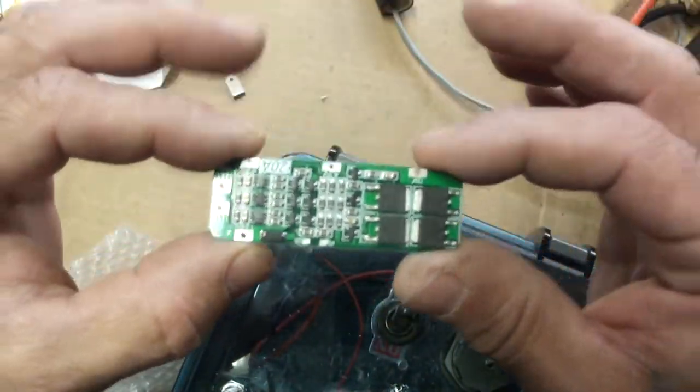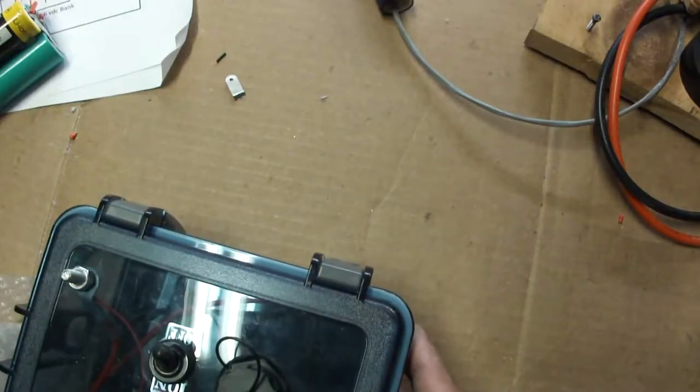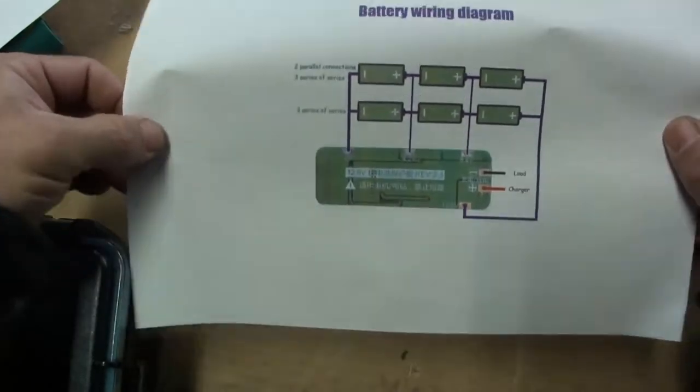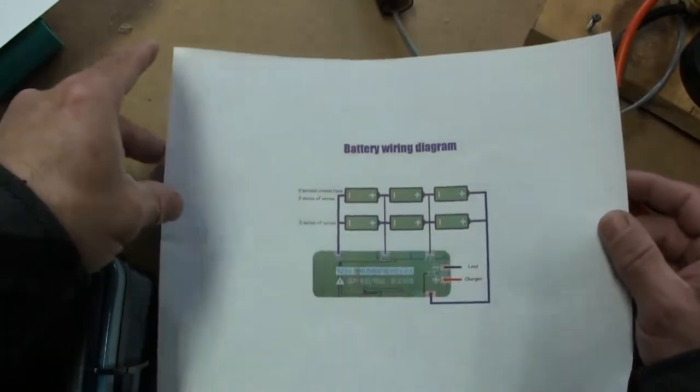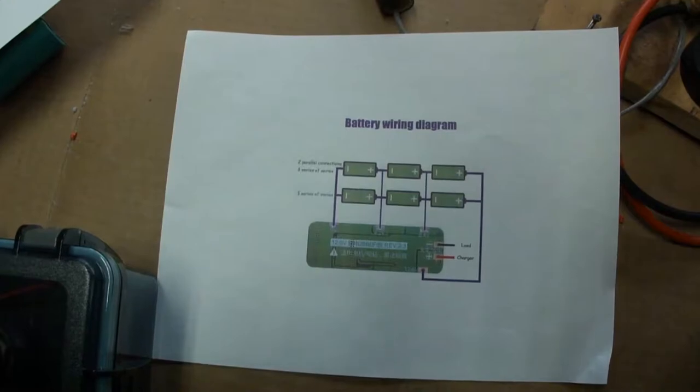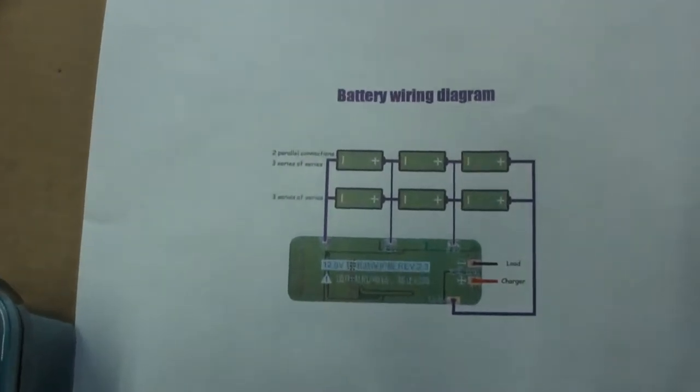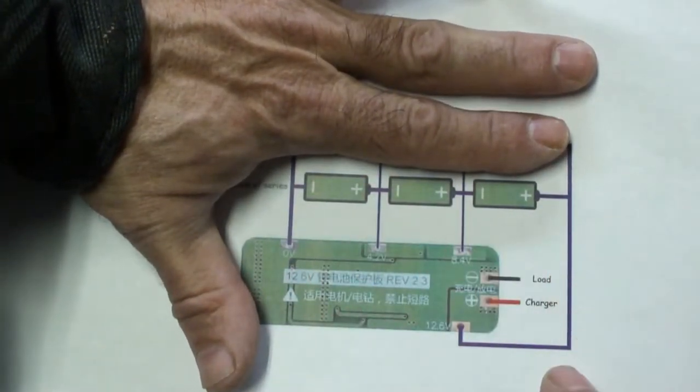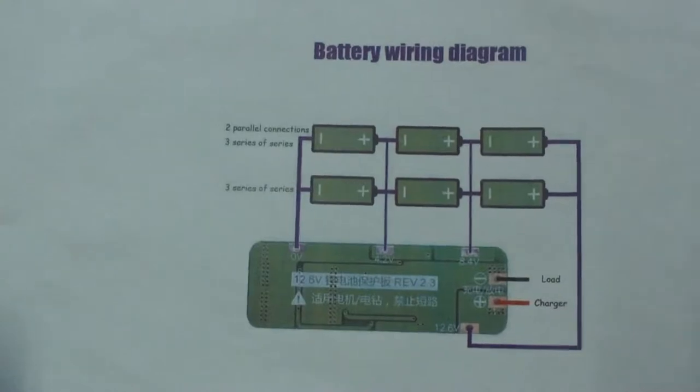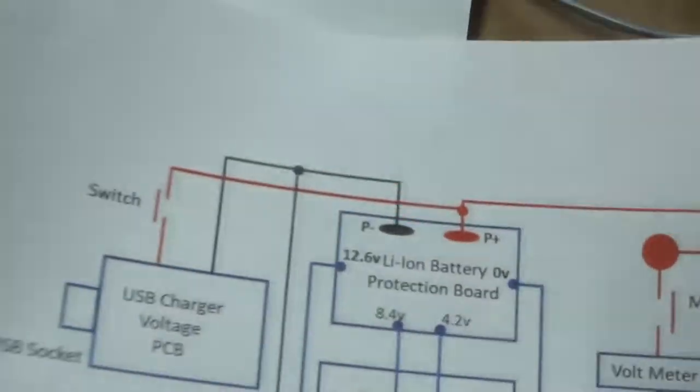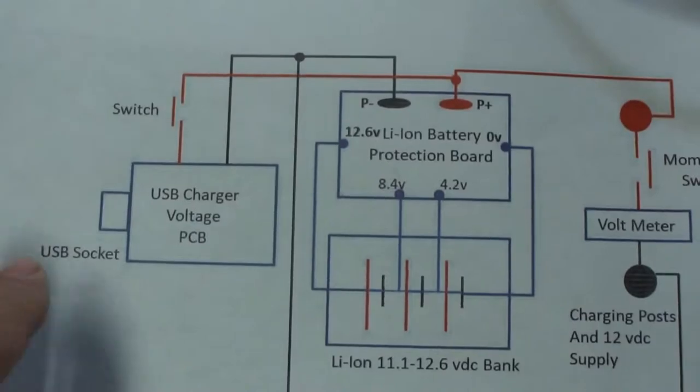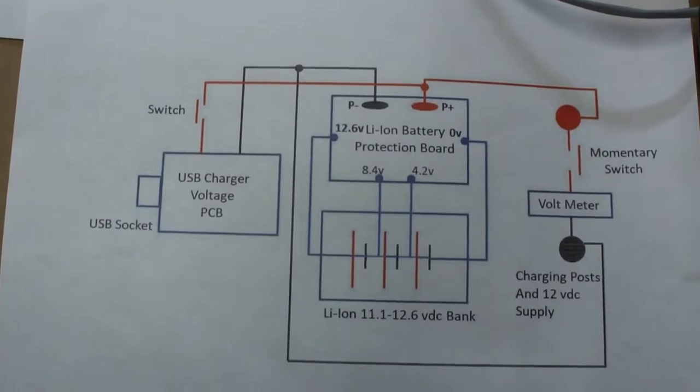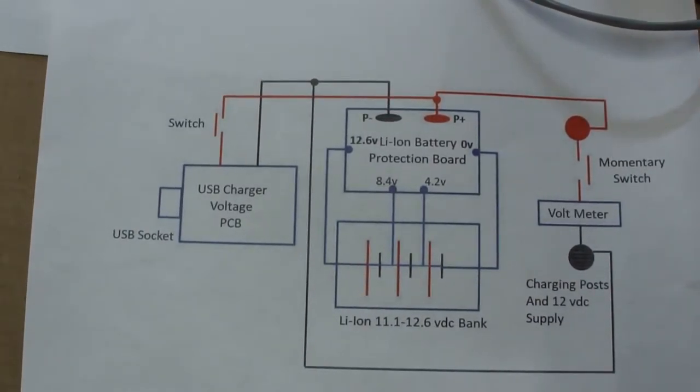I got this battery management system and what I want to do is show you the schematic. You'll be able to download these, I'll put links in the description. This is from the vendor of the battery management system. I'm not using that configuration. I'm actually putting one set of cells in series and I'm doing it twice, then I'll hook them up in parallel. Here's the circuit diagram for the overall box with all the batteries in it. So let's go ahead and get started.